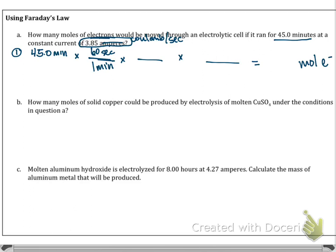And then lastly, I'm trying to get from coulombs to mole of electrons. That relationship is going to be our Faraday's constant. So 96,485 coulombs per one mole of electrons. We should be able to solve this out. We can see that all the units cancel and we get 0.108 moles of electrons.